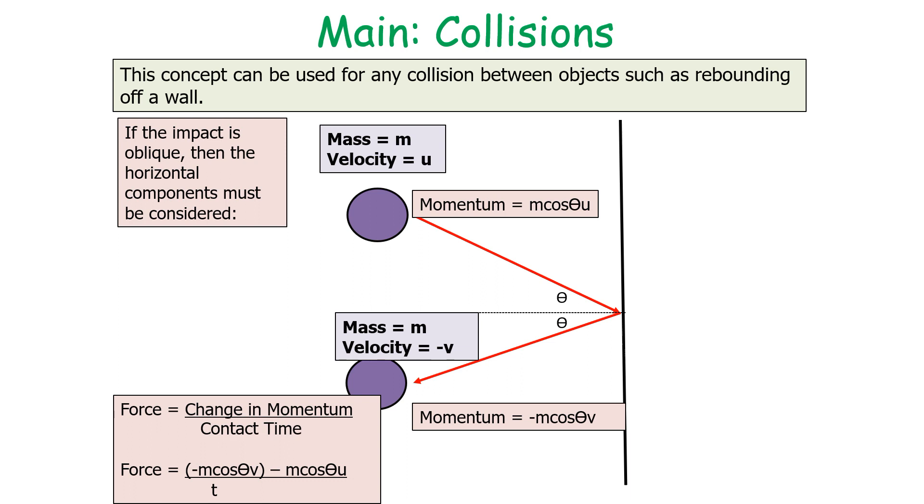As well as that, if the impact is oblique, then the horizontal components of that velocity must be considered. So therefore, if we have in this example, as you can see here, the momentum is going to be m cos theta u initially, and then after it's rebounded, it's minus m cos theta v. Again, remember, minus because it's in the opposite direction. So this allows us to work out the force exerted to be minus m cos theta v minus m cos theta u all over t.